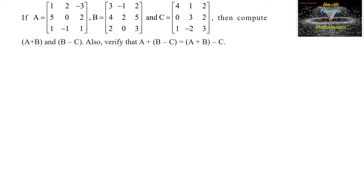Given A is equal to matrix 1, 2, minus 3, 5, 0, 2, 1, minus 1, and 1 — a 3 by 3 matrix. And matrix B is equal to 3, minus 1, 2, 4, 2, 5, 2, 0, 3 — also a 3 by 3 matrix. And matrix C is given as 4, 1, 2, 0, 3, 2, 1, minus 2, 3 — it is also a 3 by 3 matrix.